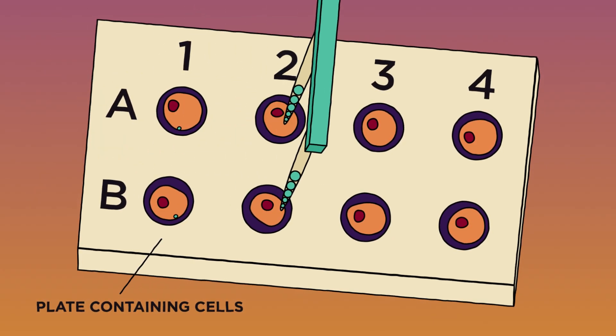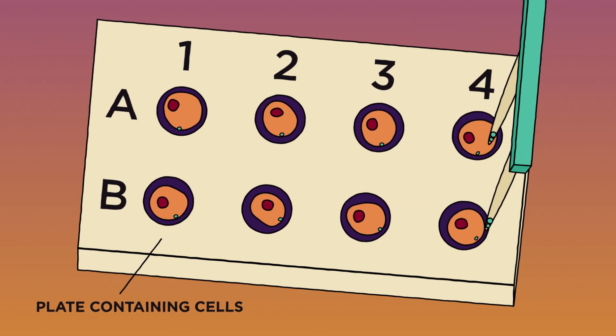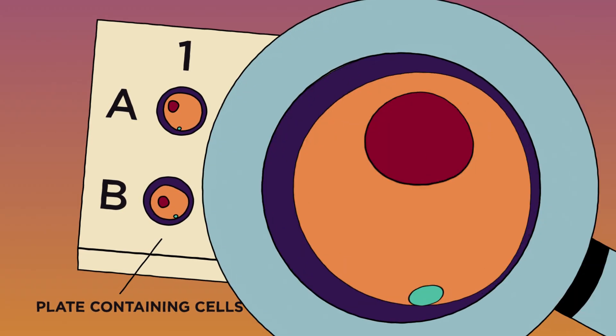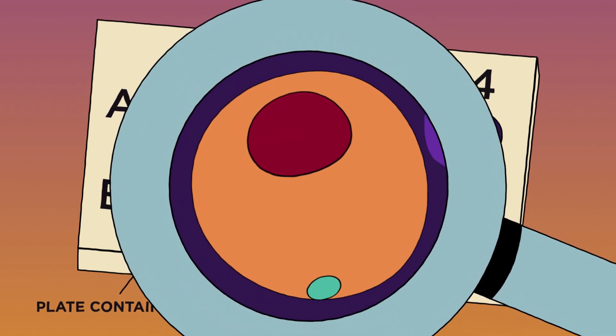This program, funded by the CF Foundation and led by Paul Negulescu, aimed to find small molecules that could help CFTR reach the membrane or boost its function in other ways.